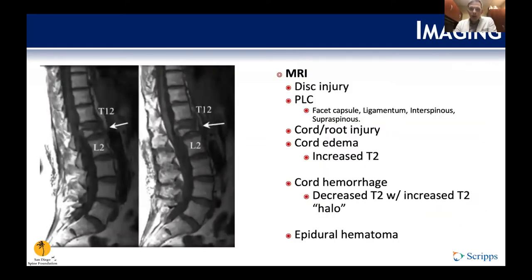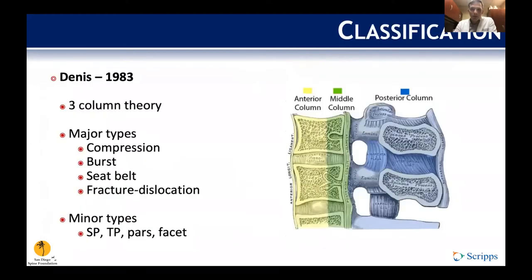For soft tissue assessment, MRI is the heavy hitter. Key things we look at are disc injury and the posterior ligamentous complex — specifically signal change in the facet capsule, ligamentum flavum, and the interspinous and supraspinous ligaments. MRI also gives us clues about the status of the cord and nerve roots and can detect cord hemorrhage or epidural hematoma causing compression.